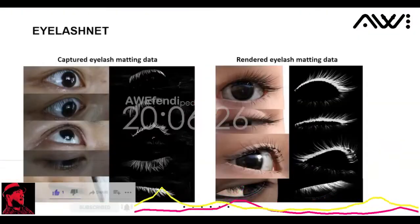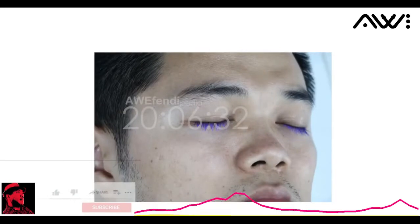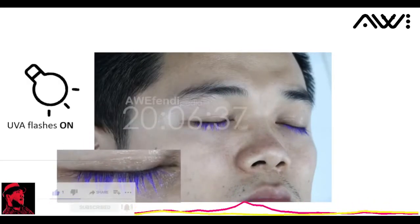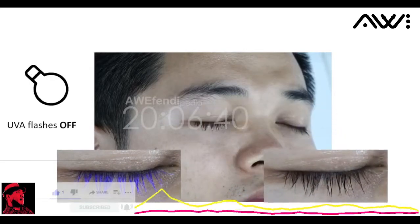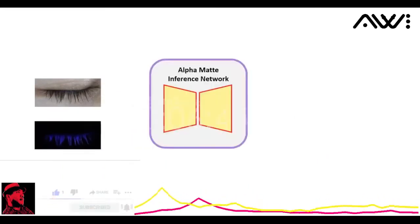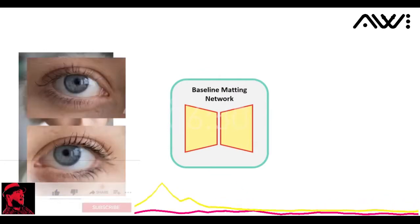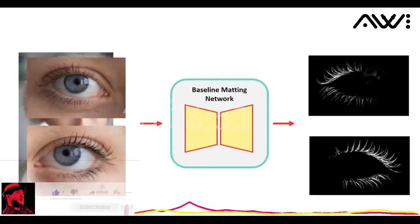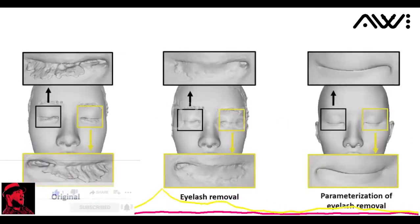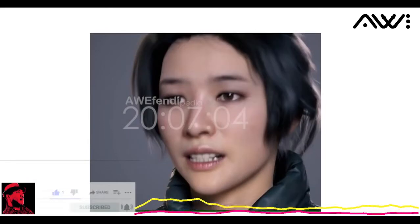We present EyelashNet, the first eyelash matting dataset generated by a specifically designed fluorescent labeling system. By coloring the eyelashes with a safe and invisible fluorescent substance, our system takes paired photos with colored and normal eyelashes by turning the ultraviolet flash on and off. We further use a novel alpha mat inference network to extract the eyelash alpha mat from the paired eyelash photos. Based on the dataset, we train a baseline matting network to estimate high quality eyelash alpha mats from portrait images. The eyelash matting enables us to remove the interference of eyelashes in the high fidelity avatar reconstruction pipeline. For more details about eyelash matting, please come to our talk.